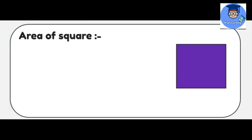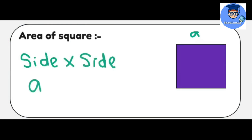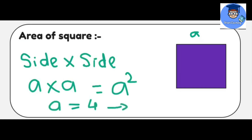Now we will learn about areas of various shapes, so let us begin. First, we will learn about the area of a square. So what is the area of a square? We will take the sides of this square — let the side of the square be A. The area of a square is side multiplied by side, that is A multiplied by A, which gives you A square. For example, if we take A equals to 4, then the area of the square will be 4 multiplied by 4, that is 16. The unit of area is meter square, so the answer is 16 meter square.